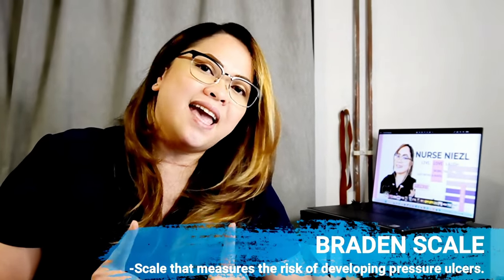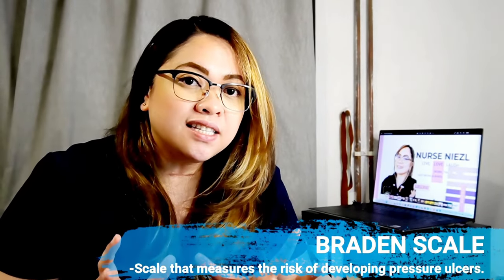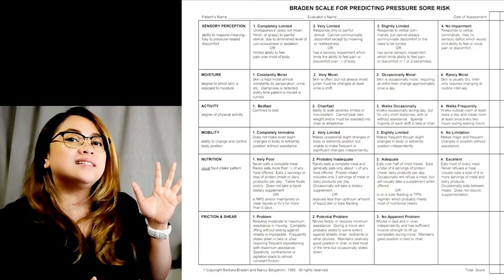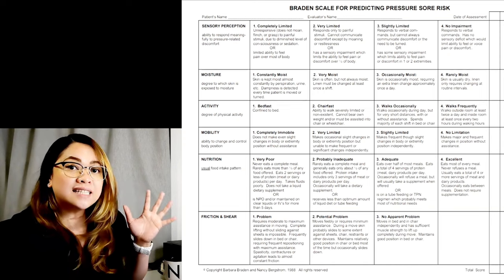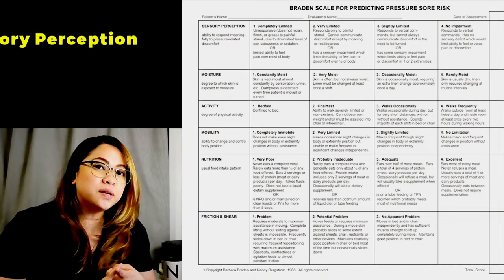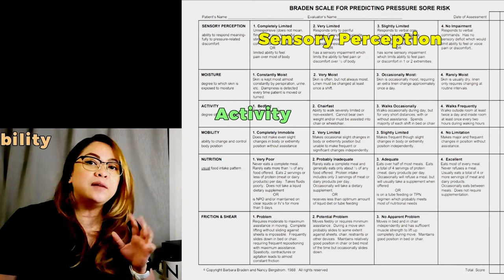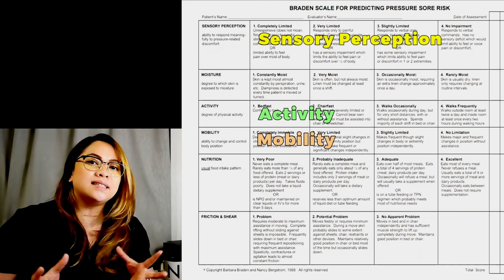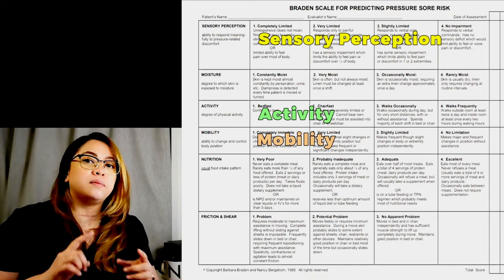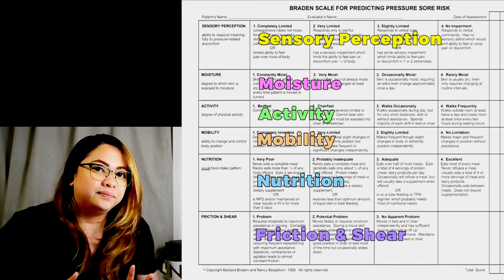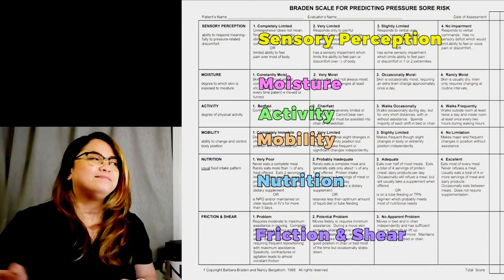What is a Braden scale? It is a scale that measures the risk of developing pressure ulcers. The scale consists of six subscales that reflect the determinants of pressure: sensory perception, activity, and mobility — as well as factors influencing tissue tolerance, which are moisture, nutrition, and friction and shear. So we get six subscales in total.